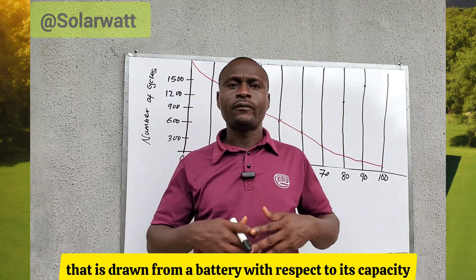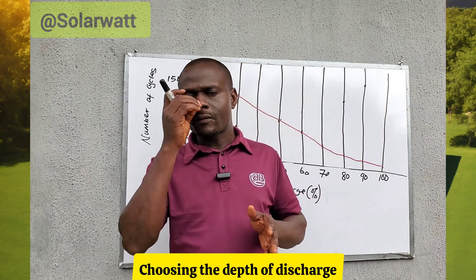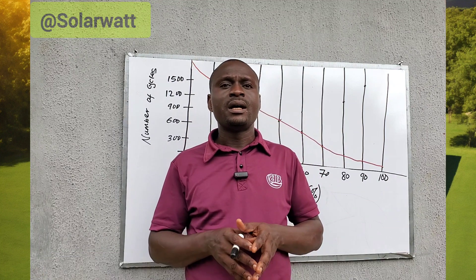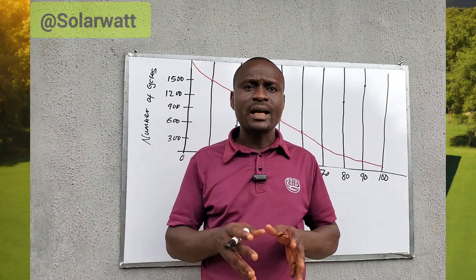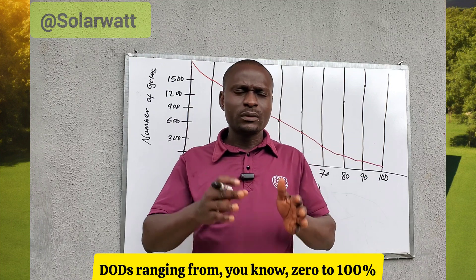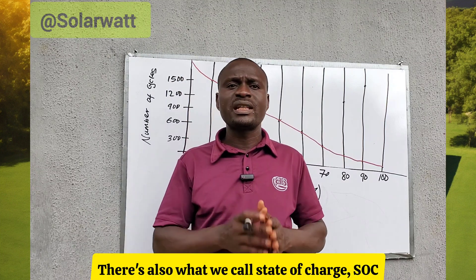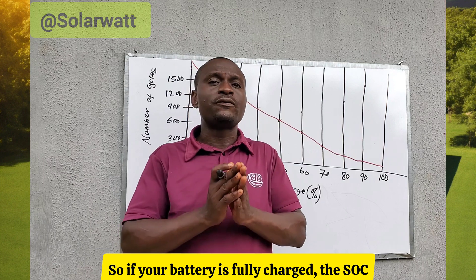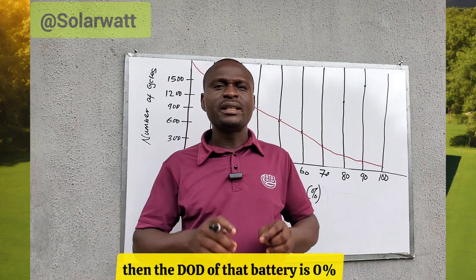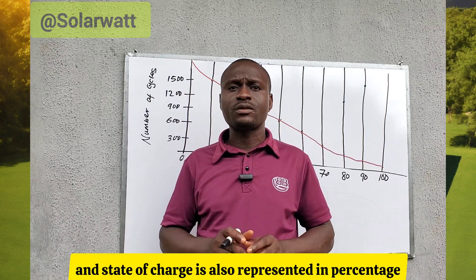Choosing the depth of discharge of a battery is very important because it is a key factor when sizing a battery bank — it determines the size of the battery bank. DoD values range from 0 to 100. The DoD is the opposite of state of charge (SoC). If your battery is fully charged, the SoC is 100% and the DoD is 0%.